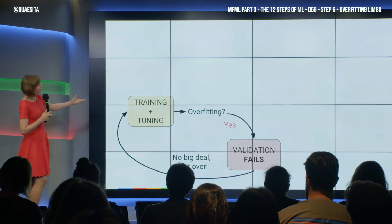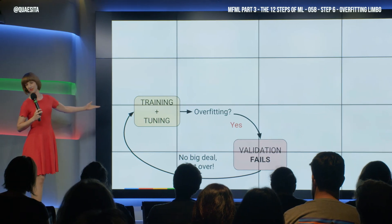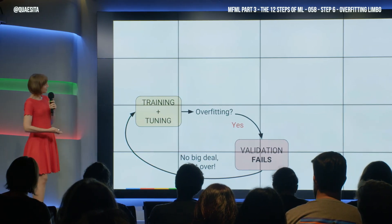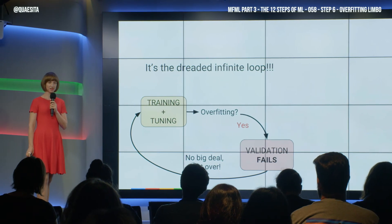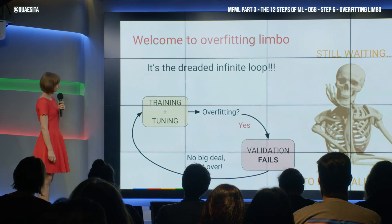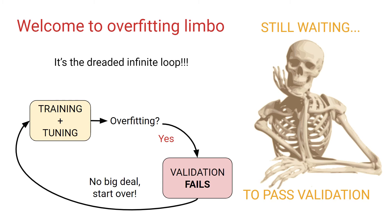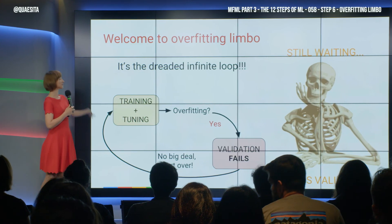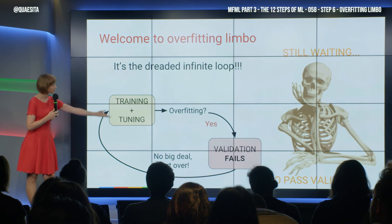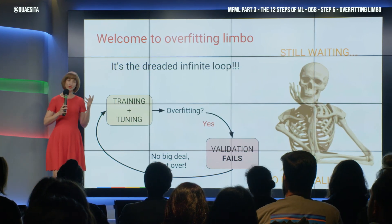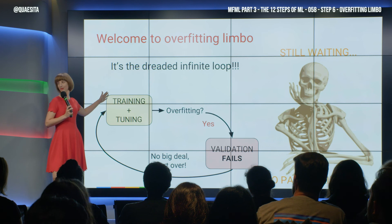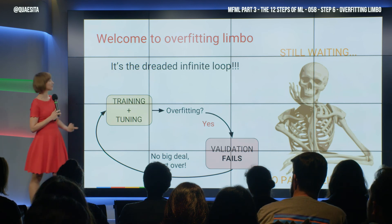As you examine this diagram, you begin to notice something — it's the dreaded infinite loop of projects that never end. You're not launching horrible things, but you're not launching things. You're protected, but it never ends, and you never get anything good by continually being in this overfitting limbo, constantly overfitting. Validation fails, go back, try again, overfitting. So, ideally, hopefully, you want to launch good things and get promoted.